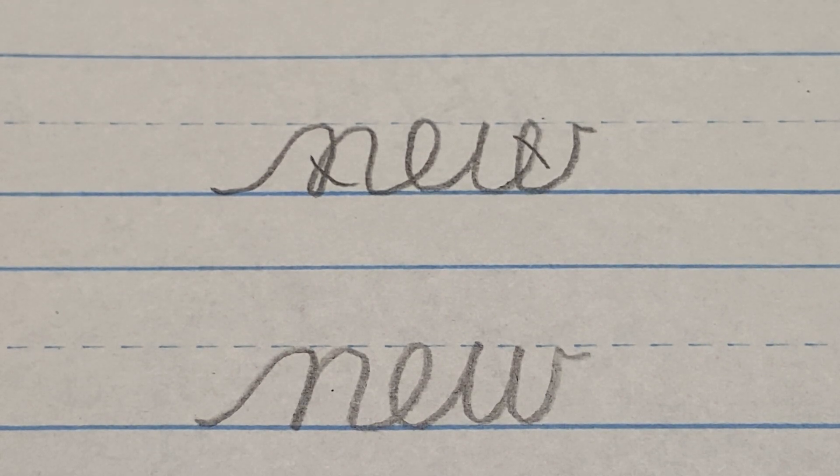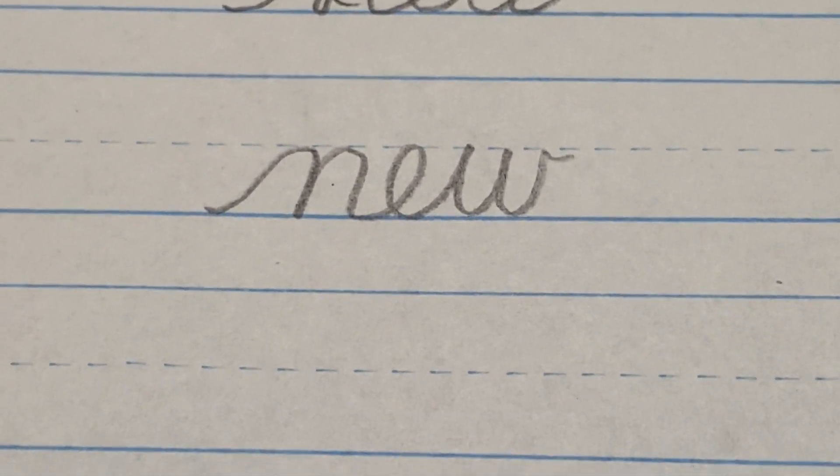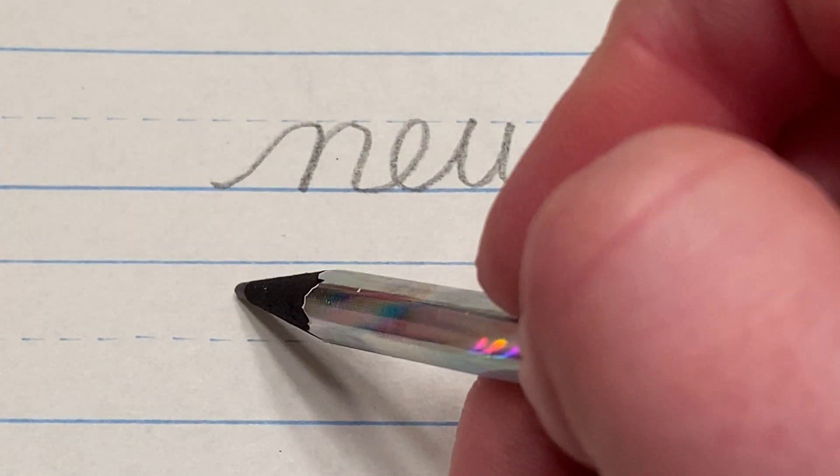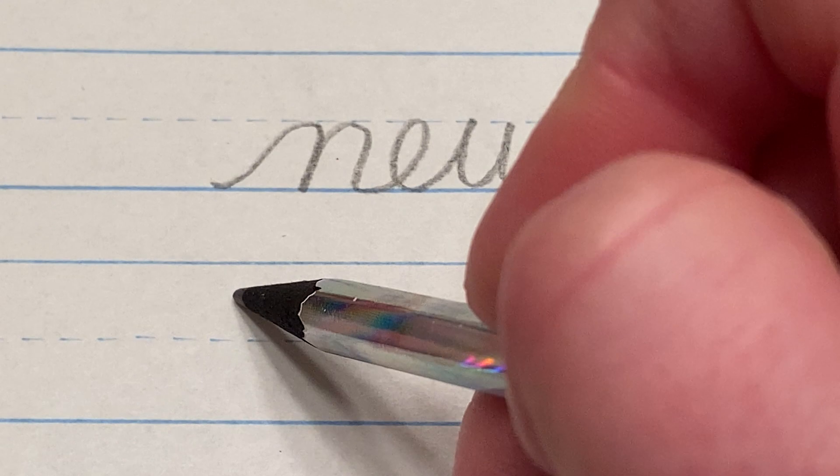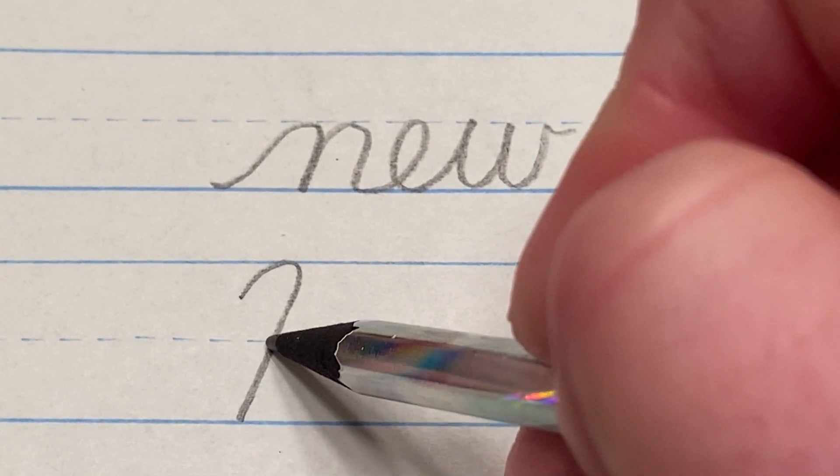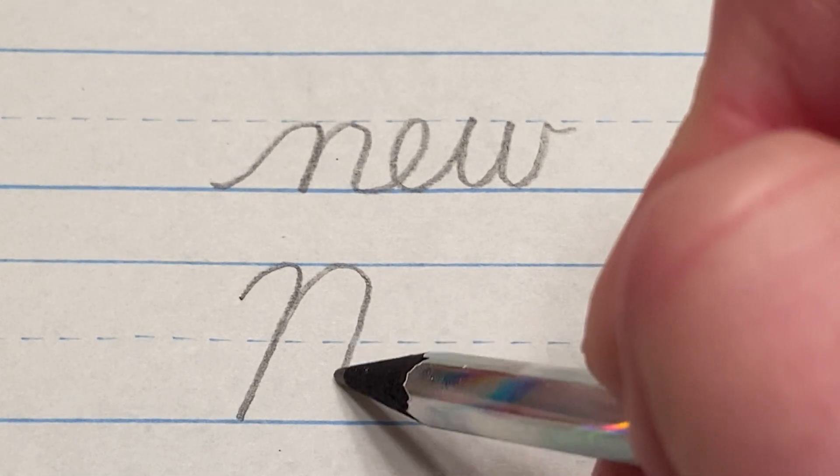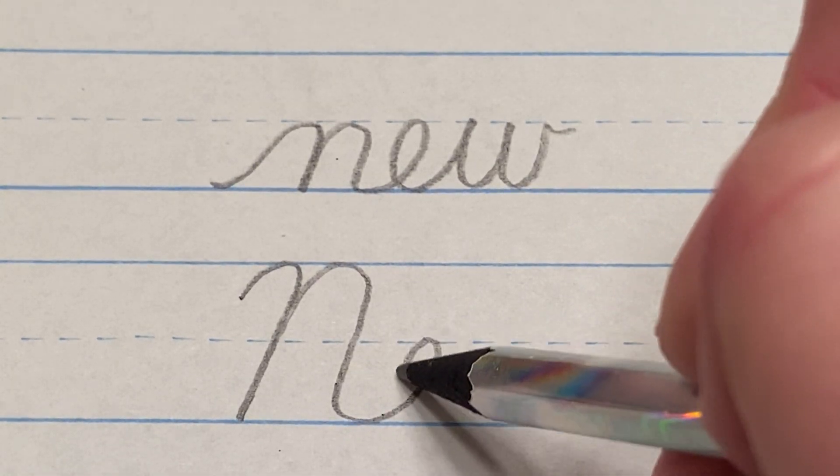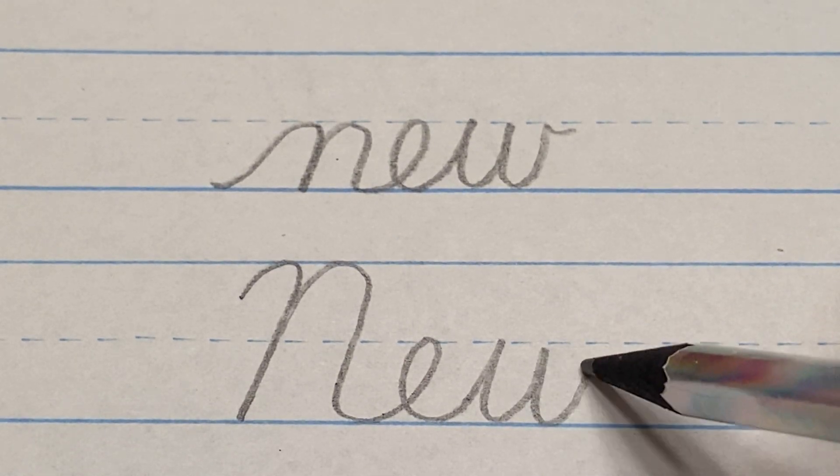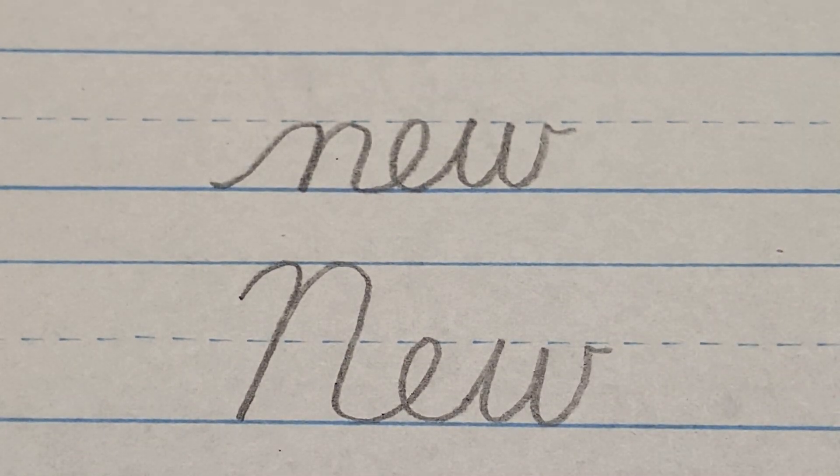You definitely might find yourself needing to write this word with a capital N. That shouldn't be any problem at all. So you start a little bit below the ceiling, do that kind of backwards, lefty candy cane, all the way up to the top, into your E, and into your W. One, two, middle, and attach.